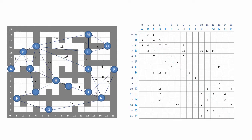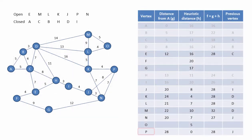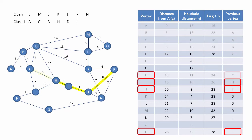Ultimately, this is what the program will generate: a list of previous vertices that contains the information we're looking for — the shortest path from A to P, or at least one of them. In fact, our program will be written to find the shortest path from any vertex to any other vertex in the graph.